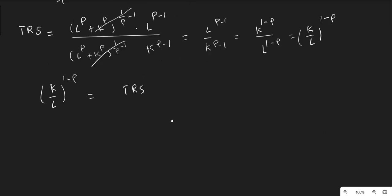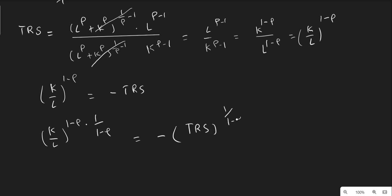Now we have to solve for K/L. It should be noted that the technical rate of substitution always appears with a minus sign. To isolate K/L, take the power one over (one minus ρ) on both sides. K divided by L to the power (one minus ρ), raised to the power one over (one minus ρ) — this power cancels out, leaving K/L. This equals negative times the technical rate of substitution raised to the power one over (one minus ρ). The minus sign reflects the trade-off between labor and capital.